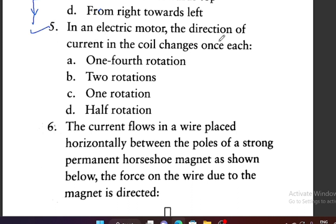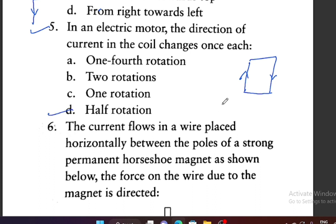Question 5 (Electric Motor): In an electric motor, the direction of current in the coil changes once after — one-fourth rotation, after 2 rotations, after 1 rotation, or after half rotation? Option D is correct — the direction of current changes after half a rotation.